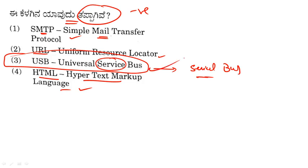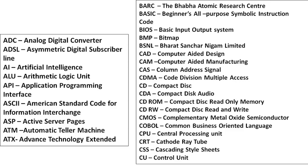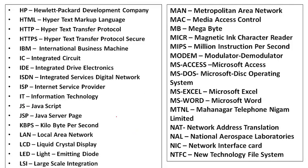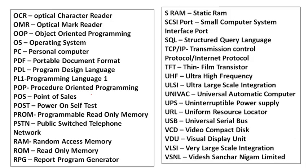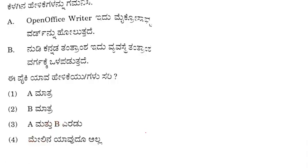We need to know important full forms: ASCII full form, BIOS full form — Basic Input Output System — CD and CDMA. The internet protocol and URL are important. USB is Universal Serial Bus. It is very important to know this list and note the comparison.